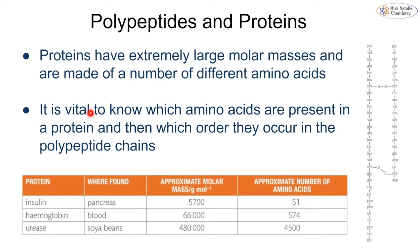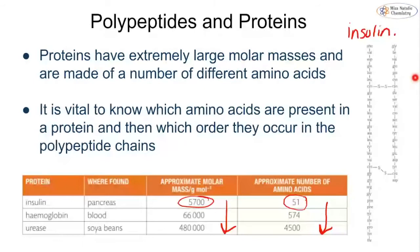Proteins are going to have extremely large molar masses because we are combining very large amounts of amino acids — upwards of 5,000 amino acids. It's very important to know first which amino acids are present and then the order in which they occur. For example, insulin contains approximately 51 amino acids and has a molar mass of about 5,700 g/mol. Haemoglobin has a molar mass of 66,000 and urease up to 480,000, with a corresponding increase in the approximate number of amino acids each time.